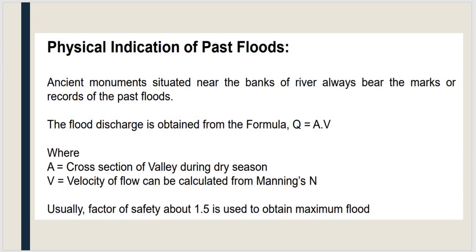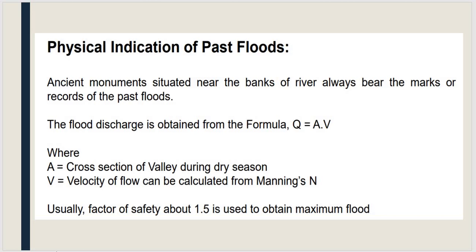The next method is physical indication of past floods. By knowing the values of past floods, we can calculate the discharge using a simple standard equation: Q = AV, where Q is the discharge, A is the cross-sectional area of the catchment, and V is the velocity.